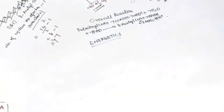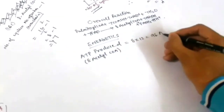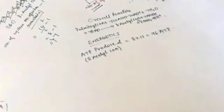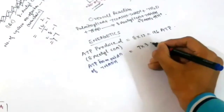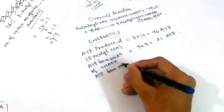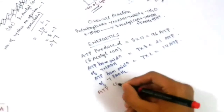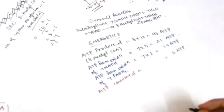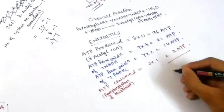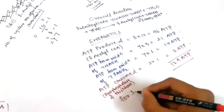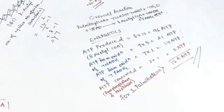Now let's see the energetics for oxidation of one molecule of palmitoyl-coenzyme A. ATP produced from 8 acetyl-coenzyme A equals 8 × 12 = 96 ATP. ATP produced from oxidation of 7 NADH equals 7 × 3 = 21 ATP. ATP produced from oxidation of 7 FADH2 equals 7 × 2 = 14 ATP. ATP consumed is 2 ATP used in the pyrophosphatase and thiokinase step. The overall net gain of ATP is 129 ATP for one molecule of palmitoyl-coenzyme A.